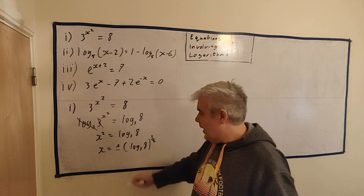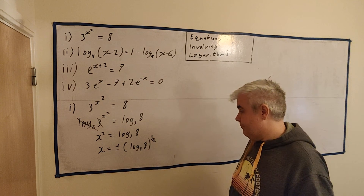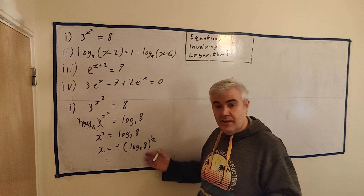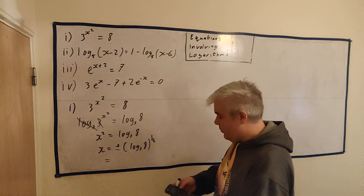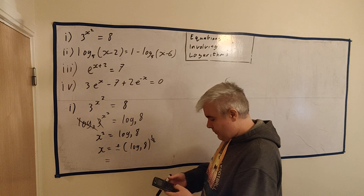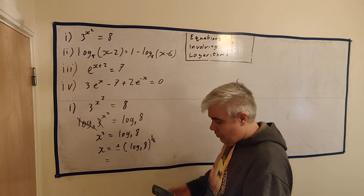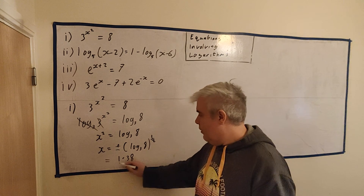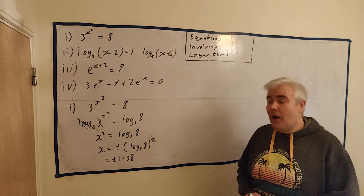Be careful: we need to add a plus or minus, because two answers could satisfy x squared — x could be positive or negative. This form is perfectly acceptable as a final answer if the question asks for an exact answer. But if they ask for two decimal places, put log base 3 of 8 into your calculator, take the square root, and the answer is plus or minus 1.38.